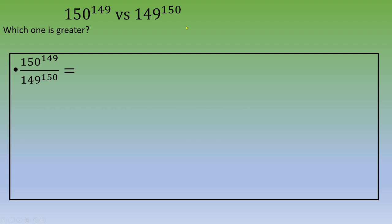When you want to compare two numbers, one way to solve the exercise is to divide one number by the other one. Let's do that: 150 power 149 divided by 149 power 150.